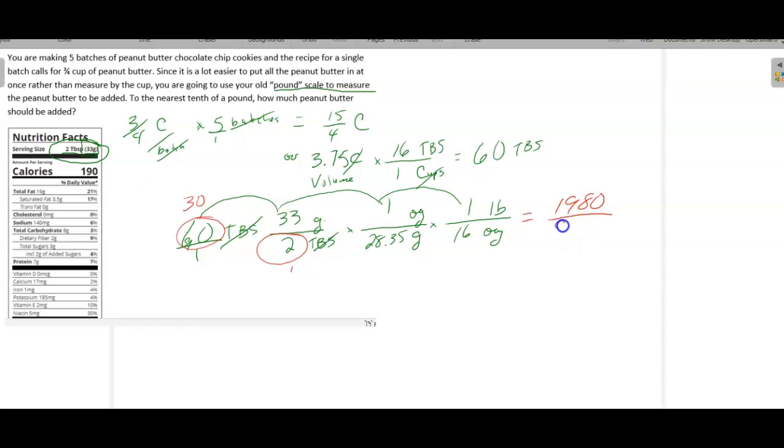And then in the denominator, we're going to get 2 times 28.35 times 16. And that is 907.2. And notice the tablespoons will reduce, the grams will reduce, the ounces will reduce. And this will be the number of pounds we have. So we just have to take that 1980 and divide it by that answer, the 907. And that is 2.18.